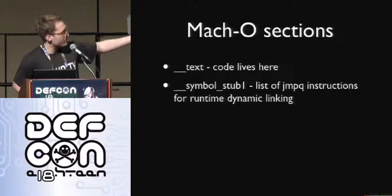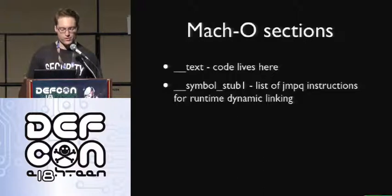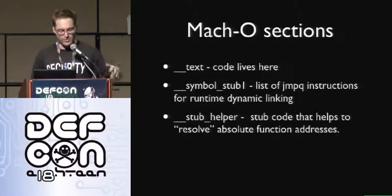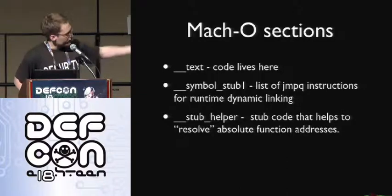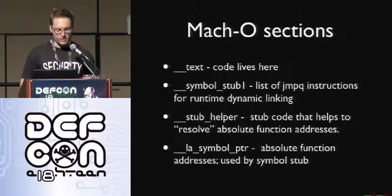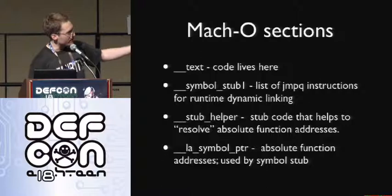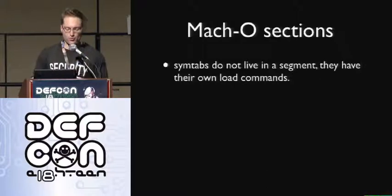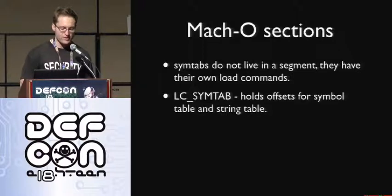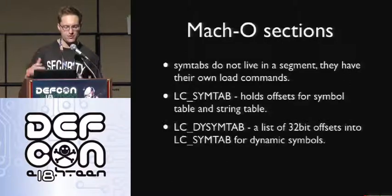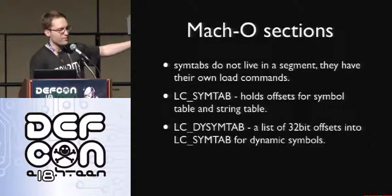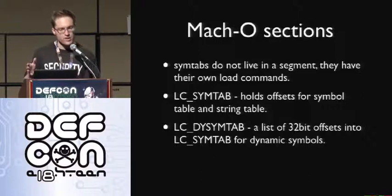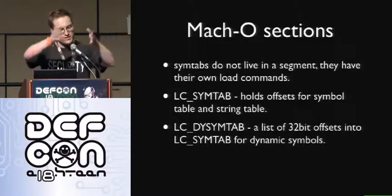A couple of Mach-O sections similar to ELF: the text section is where code lives. There's the symbol stub section — a list of jump queue instructions useful for runtime dynamic linking. There's also the stub helper, which is stub code that helps resolve absolute function addresses, and the symbol pointer section, which holds table entries referenced by the stub helpers. Importantly, symbol tables do not live in a segment — they have their own load command, the LC_SYMTAB load command, a structure that tells you where strings and symbol-to-offset mappings live. There's also a DYSYMTAB — in Mach-O, it's a list of offsets into the SYMTAB, whereas ELF has two separate tables.